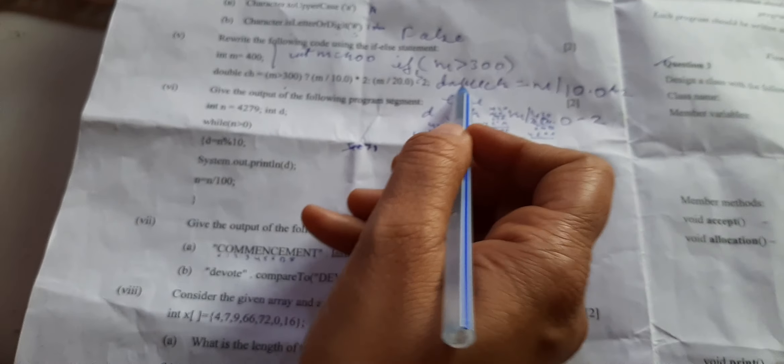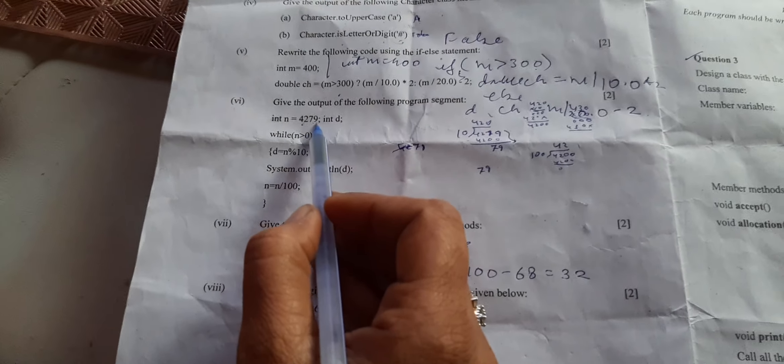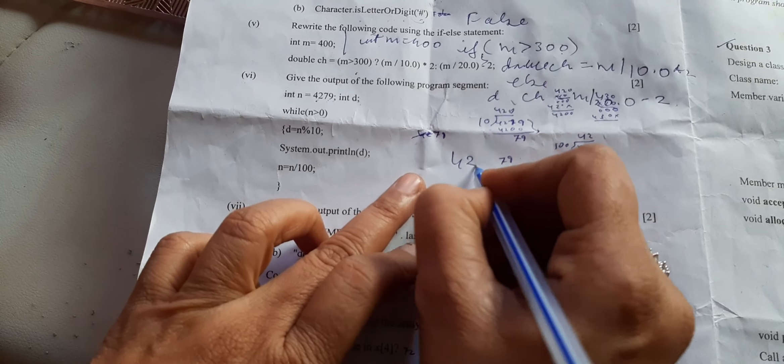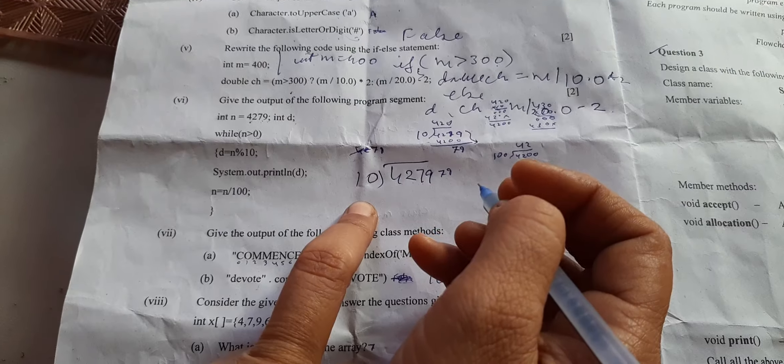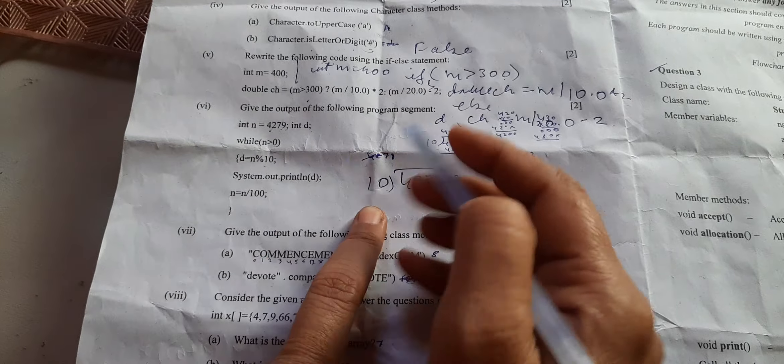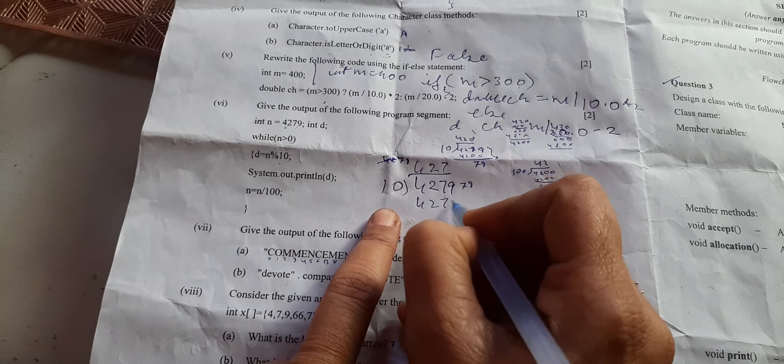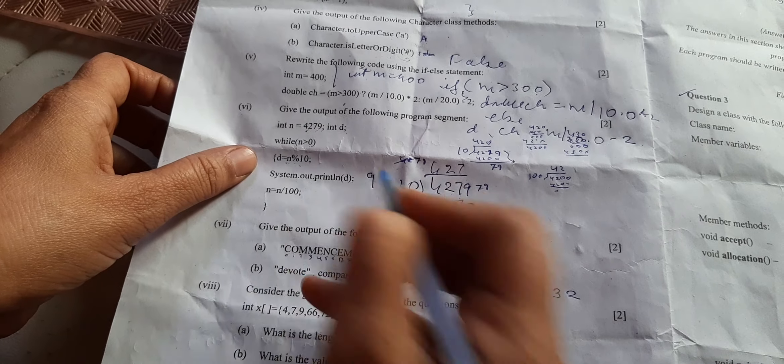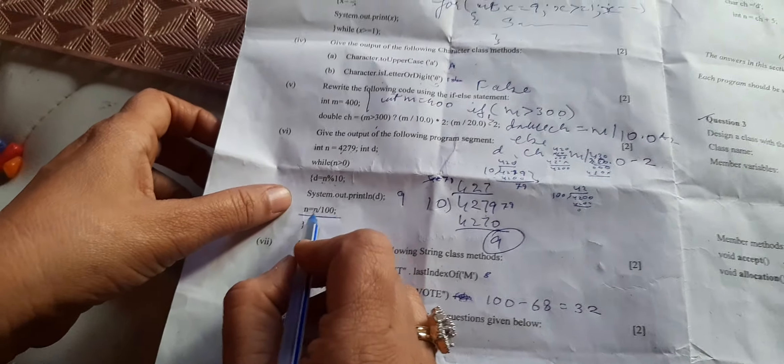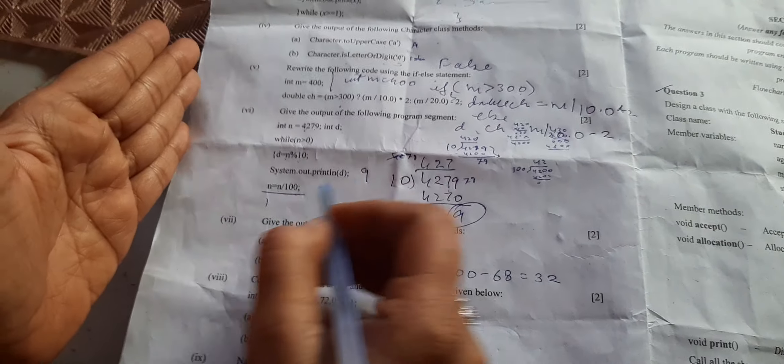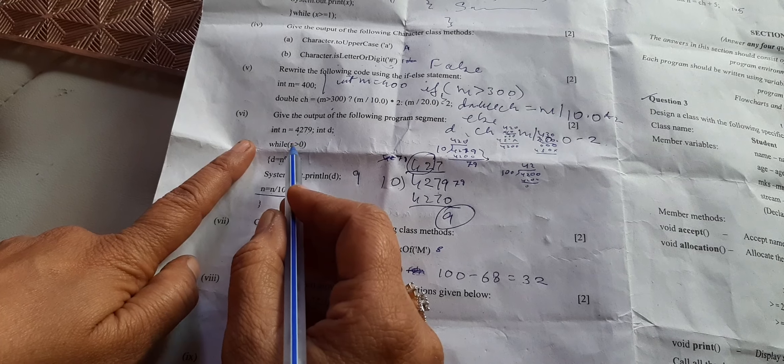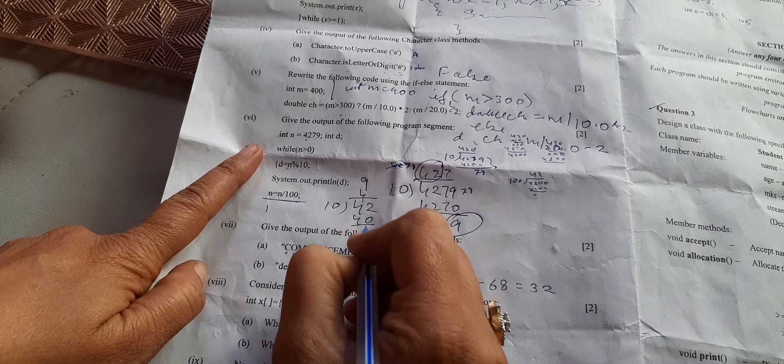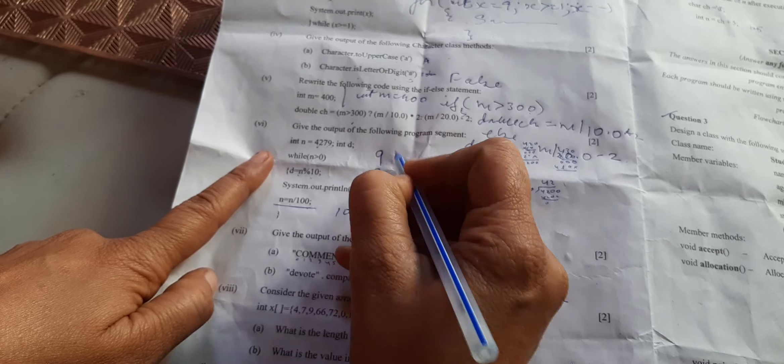Give the output of the following. n value is 4279. We'll take out the digit. 4279 is greater than 0. 4279 modulus 10, what will be the remainder? Remainder will be 9, so d value will be 9. System.out.println, so 9 will be printed. Now be very careful - it is written /100, that means we'll divide it by 100. Question will be 42. The new number will be 42. 42 modulus 10, remainder is 2. So answer will be 9 and 2 on separate line because ln is put there.